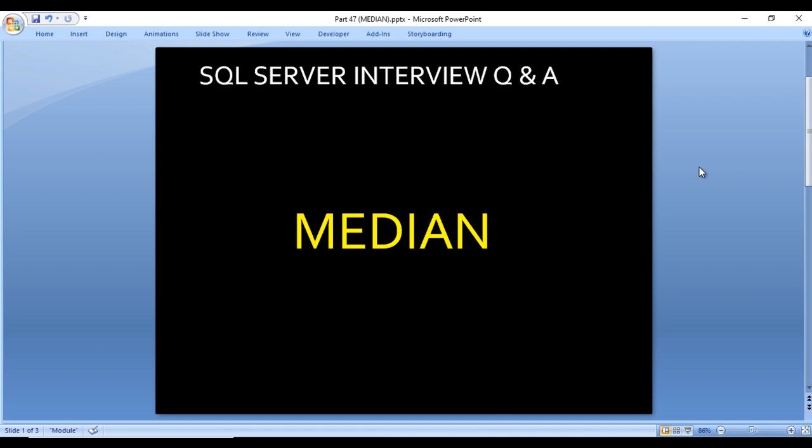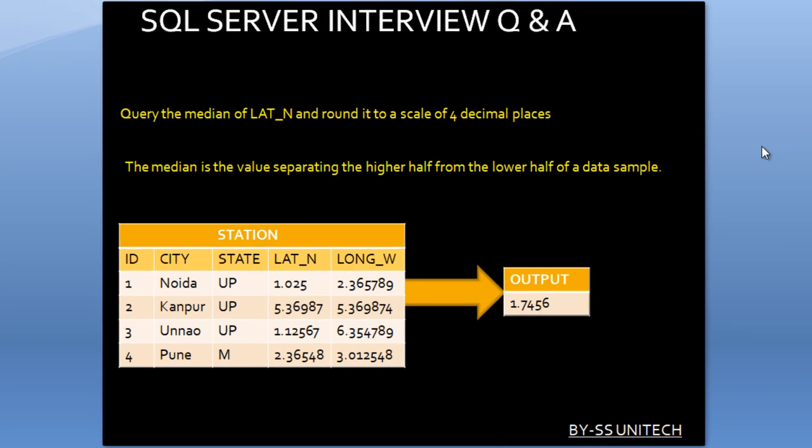Let's move to the next slide to understand the question. We have an input table with five columns: ID, city, state, lat_n, and long_w. We just want to write a query for getting the median of lat_n and round it to a scale of four decimal places.